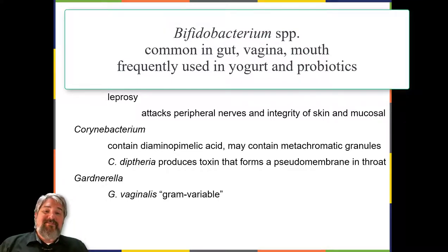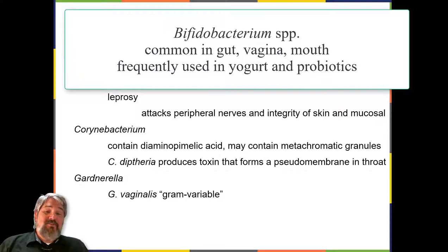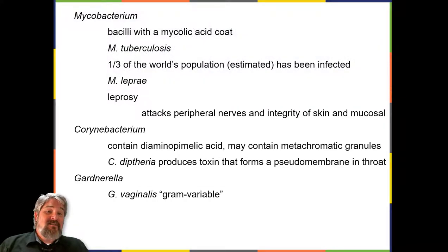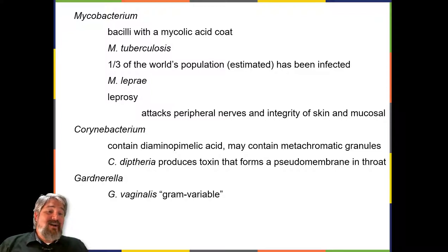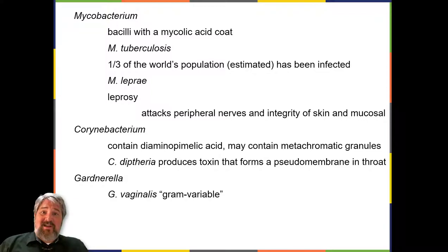The genus Bifidobacterium consists of filamentous anaerobes, many of which are commonly found in the gastrointestinal tract, vagina, and mouth. Bifidobacterium species constitute a substantial part of the human gut microbiota and are frequently used as probiotics in yogurt production. The genus Gardnerella contains only one species, Gardnerella vaginalis. The species is defined as gram-variable because its small coccobacilli do not show consistent results when Gram-stained.